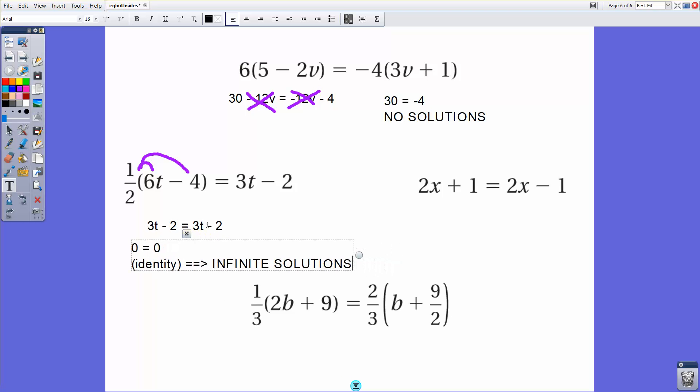And whenever we arrive at an identity, our conclusion is that there are infinite solutions, which means that any number we plug in for t here is going to yield a true statement. If I did 10, 6 times 10 is 60 minus 4 is 56. Half of that is 28. And then 3 times 10 minus 2 is 28. So anytime I plug in a number for t, I will get a true statement here because I arrive and simplify out to an identity.